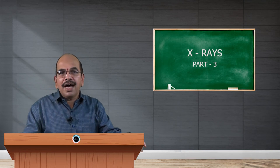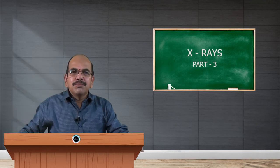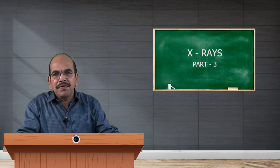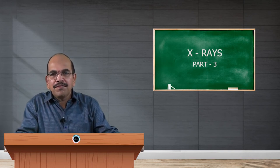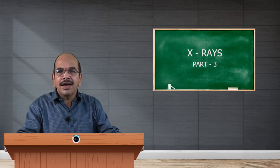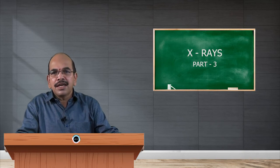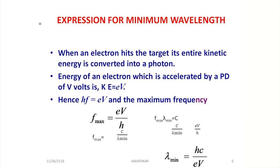Having understood the concept of characteristic radiations, let us now move towards the expression for minimum wavelength of x-rays produced in an x-ray tube. X-rays are produced when fast-moving electrons hit a target, and the kinetic energy of these electrons is converted into x-radiation. If V is the accelerating potential and e is the charge on the electron, then the kinetic energy associated with the electron is given by KE = eV.